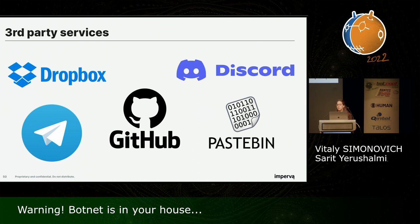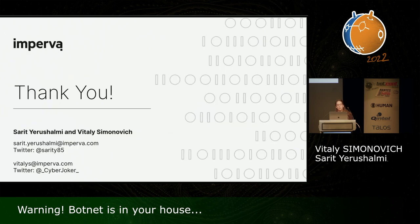Sixth, third-party services: both Kashmir Black and the Log4Shell and Spring4Shell botnets use common services like Robux, Discord, and GitHub to carry out their operations. If your server doesn't need to initiate communication with these services, you should block egress traffic to them using firewalls. Thank you very much for listening to our talk. Feel free to contact us if you have any additional questions.